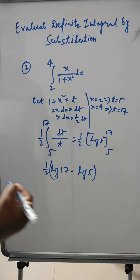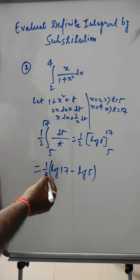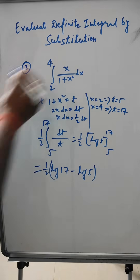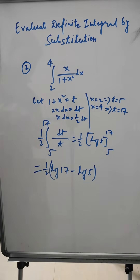So the answer is (1/2)(log 17 - log 5). I hope this is also clear, there is no issue.